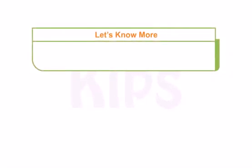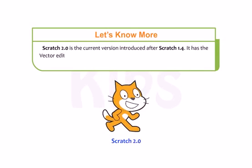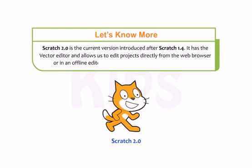Scratch 2.0 is the current version, introduced after Scratch 1.4. It features the Vector Editor and allows us to edit projects directly from the web browser or in an offline editor. It was officially released on May 9, 2013.